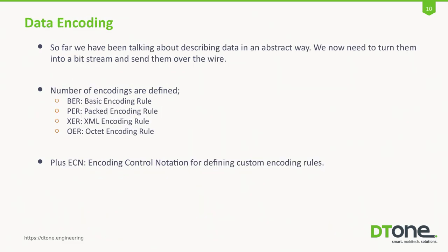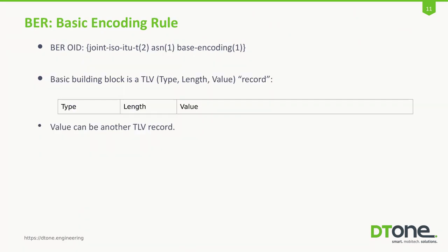So far, we have been talking about an abstract way to represent data. To actually send the data over the wire, we need to encode them. There are plenty of encoding rules which describe different formats of how the data are encoded, and you can also define your own rules. Probably the most common encoding rule is the Basic Encoding Rule, which is built around the notion of a TLV object, where T stands for type, L for length, and V for value. The key concept is that you can nest — basically a value can be another TLV object.